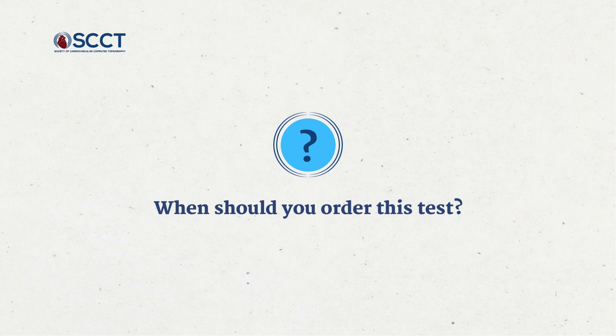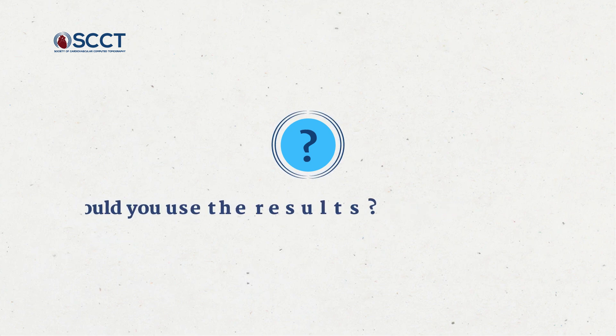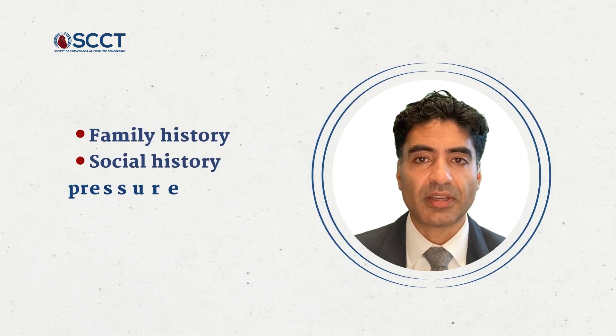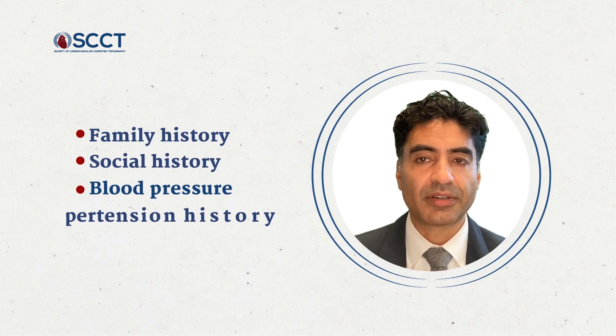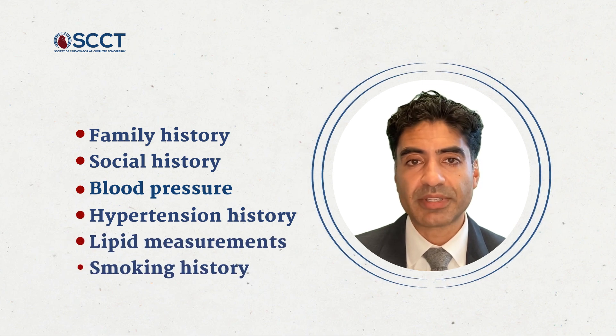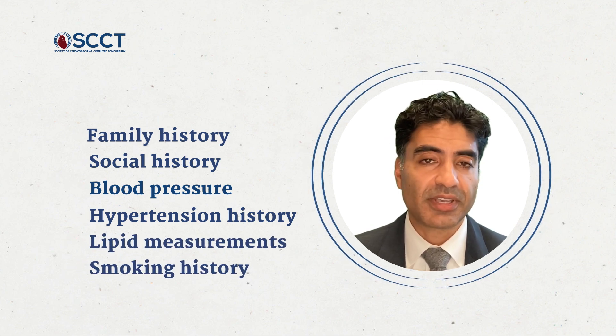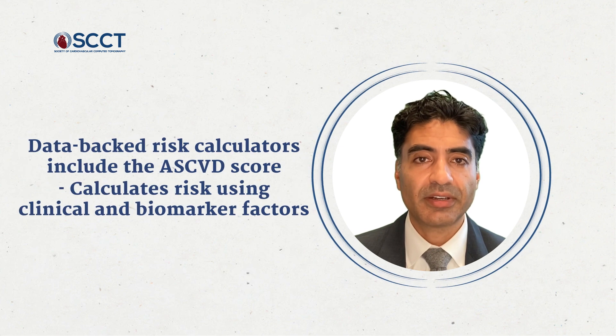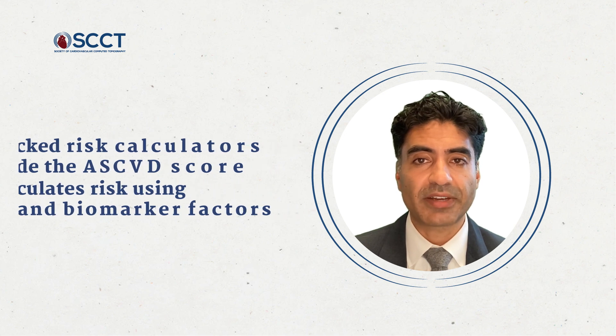So when should you order this test and how should you use the results? The best indication is for a patient that's asymptomatic with no indication of an acute danger, but that you want to look at the risk. You can collect family history, social history, a few measurements like blood pressure, hypertension history, and lipid measurements. Ask them whether they smoke to assess risk. There are great calculators, like the ASCVD score calculator, informed by lots of data using just these clinical and biomarker risk factors.